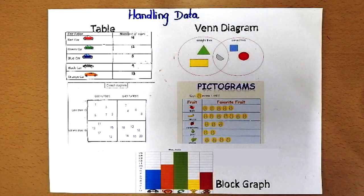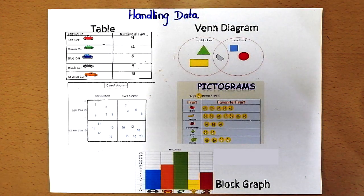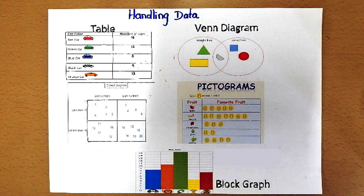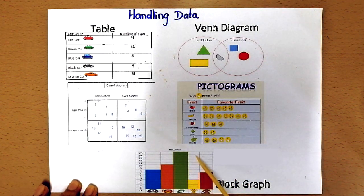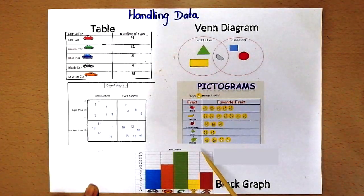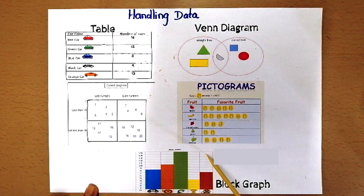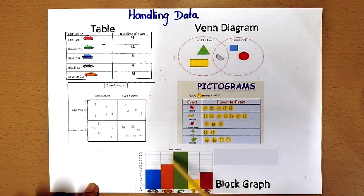Hi students, you have already learned about lists and tables in your previous class and now you're learning about block graphs. Block means small boxes each representing a unit or a value and graph means a diagram or a chart.